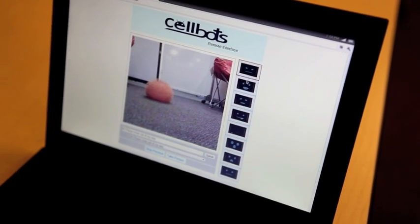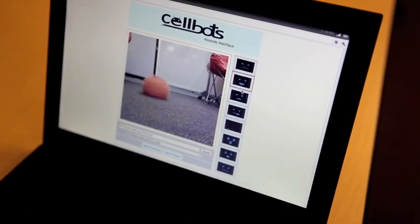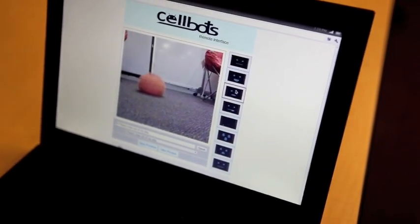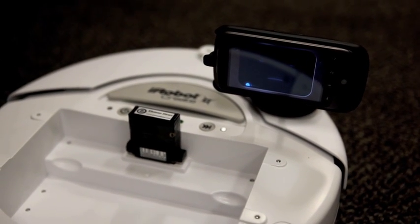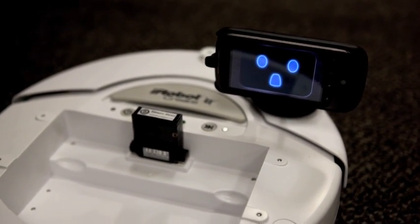So you can have it show a happy face or a sad face, which shows up on the screen of the phone, as I'm changing the emoticons here. So that's an error face. That's idle. It's a surprise face, and so on.